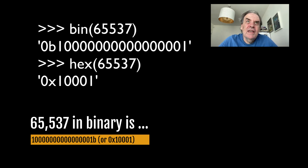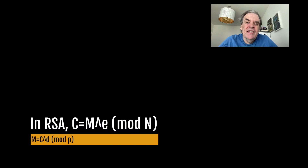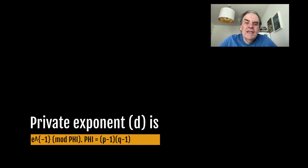In RSA the ciphertext is computed from a message m as c = m^e mod n, and is decrypted with m = c^d mod n. Just beautiful. We compute the private exponent from the inverse of the public exponent E modulus phi, where phi is equal to (p−1) × (q−1).